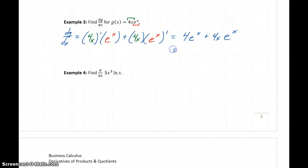And then we can factor out what's common between those. So each of these terms has a 4 and an e^x. So factoring out 4e^x gives us 4e^x times the quantity (1 + x).